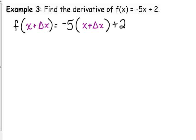Let's simplify this — distribute the -5. We get a similar result to the last problem, except we've got this +2 stuck on the end.